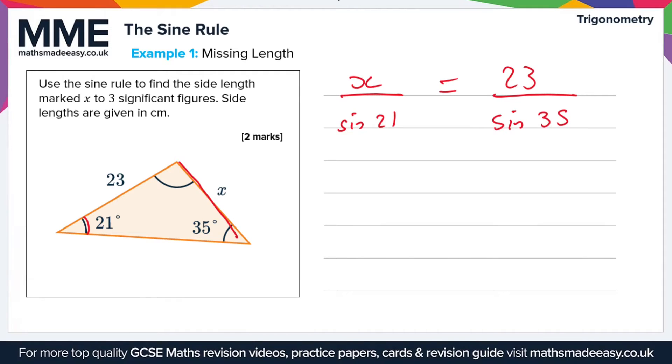Now, we want the value of X, so we're going to rearrange this equation by multiplying this value of sine 21 up to the other side of the equation. Multiplying both sides of the equation by sine 21, that's going to give us X equals 23 times sine 21.